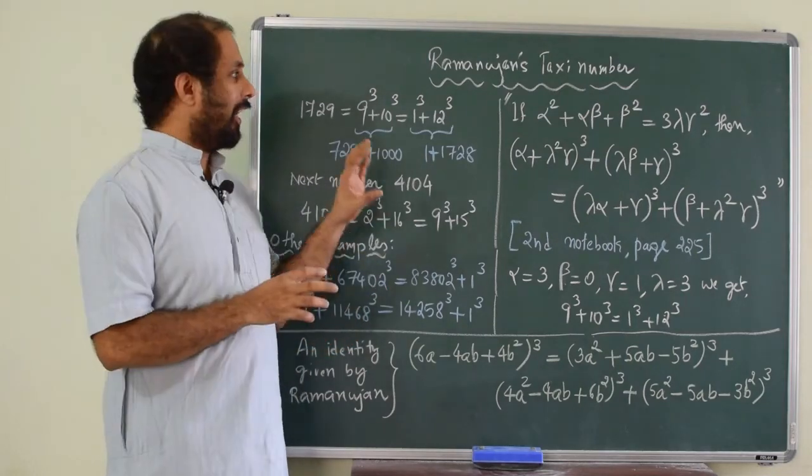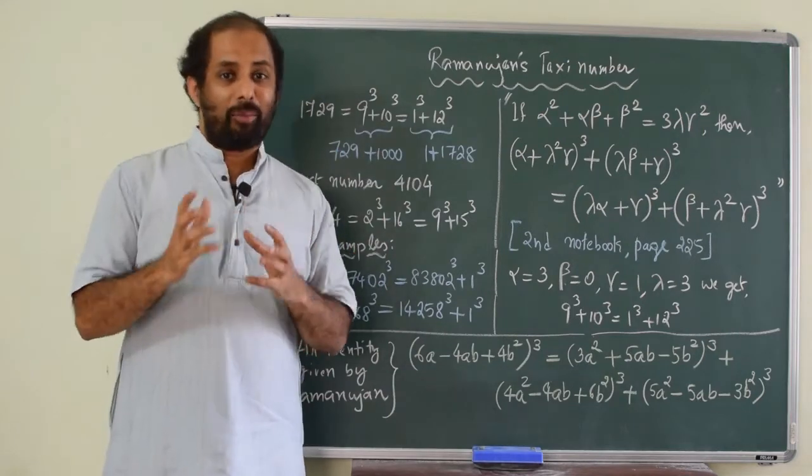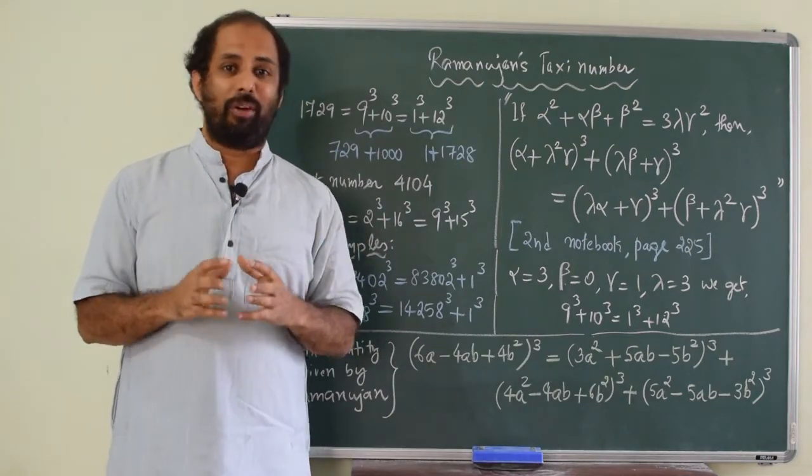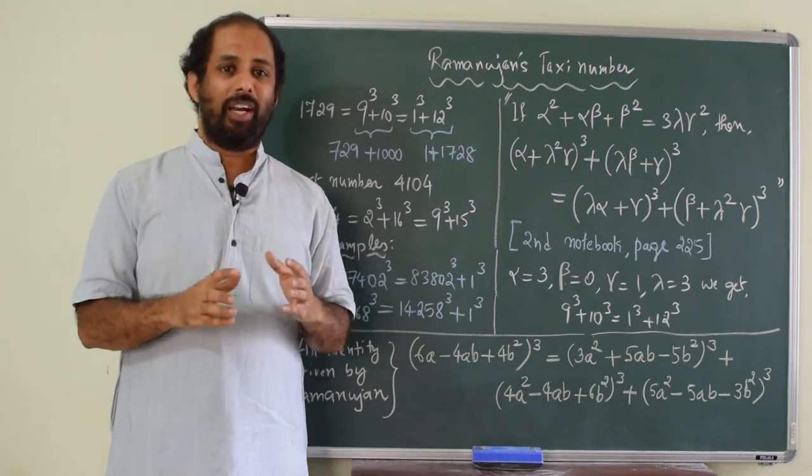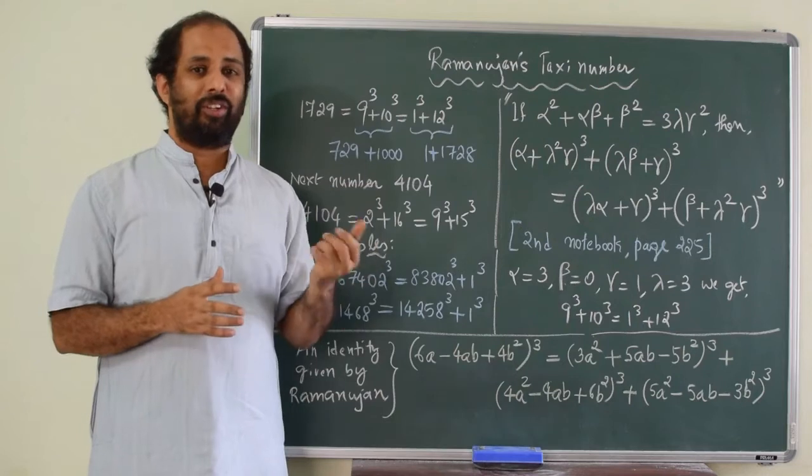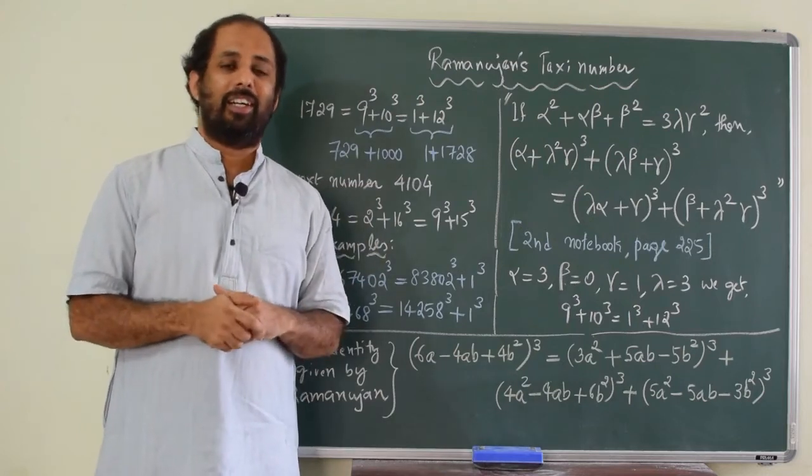He thought he had found this specialty of this number. But, before Ramanujan, almost 250 years before Ramanujan, there was a French mathematician called Frenical de Bessy, who had written the same property. But Ramanujan did not know anything about Bessy's result.